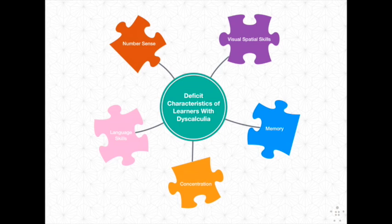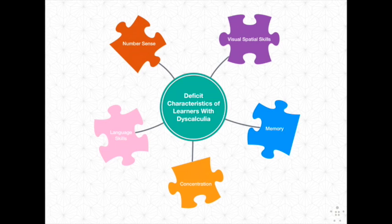Hanel identifies mathematics competencies in five areas: number sense, visual-spatial skills, language skills, concentration, and memory. Characteristics or indicators of dyscalculia generally fall into one of these five categories, and the mathematics learning of students with dyscalculia will be impacted due to the deficit of one or more of these core areas.